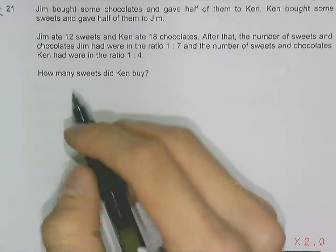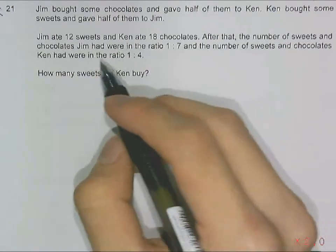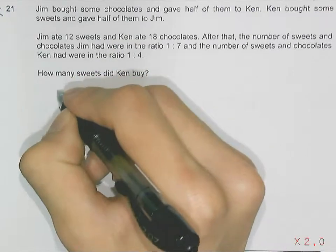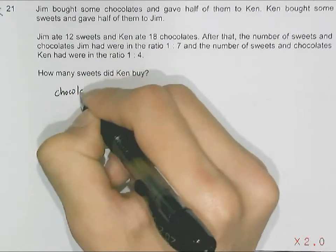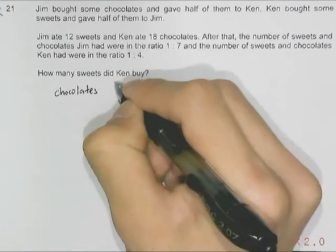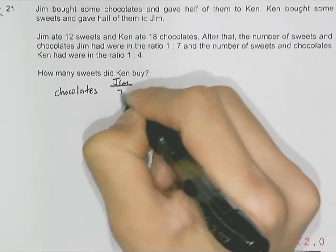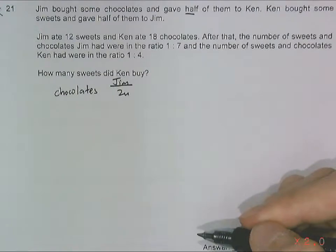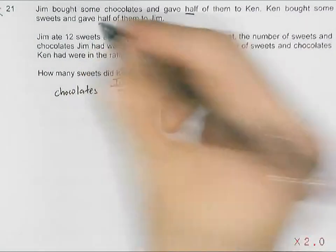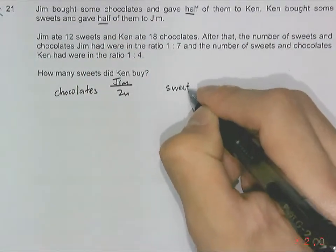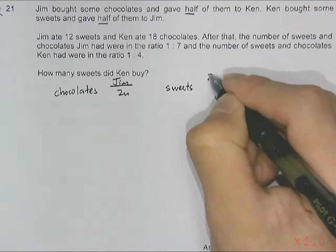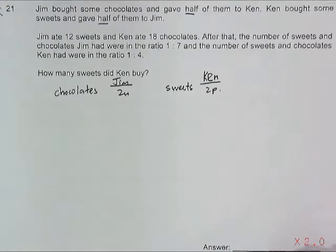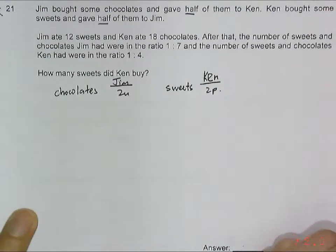This is a common cross multiplication question. Jim bought some chocolates - let's say the chocolates Jim bought was 2 units. He split half to Ken. Ken bought some sweets also, so let's name the sweets as 2 parts. This is from Ken, 2 parts of sweets.